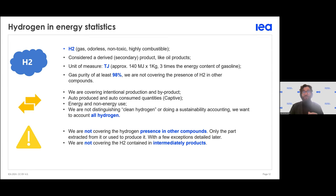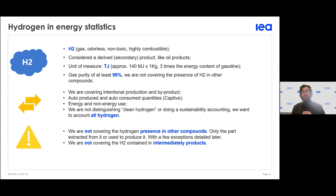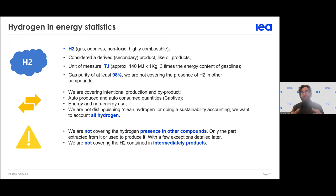We need to account for both intentional production and by-product production in our statistics. We should also consider the distinction between recoverable and non-recoverable energy. We also need to pay attention to who the producer is and what technology is being used. In our questionnaire, we do not distinguish between clean and non-clean hydrogen — we only focus on the technical aspects.